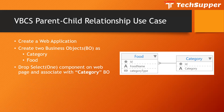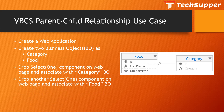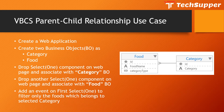Then we are going to drop a select-one component on a web page and associate it with the Category business object first. Then we will drop another select-one component on the web page and associate it with the Food business object. Then we are going to add an event on the first select-one choice and filter only the food which belongs to the selected category.